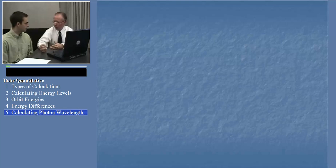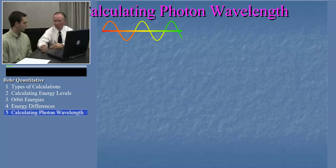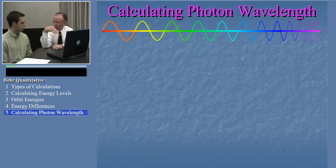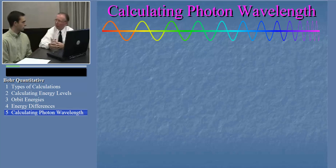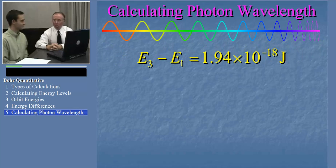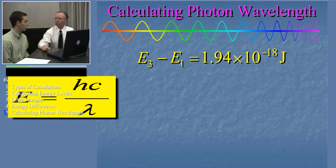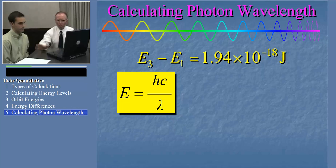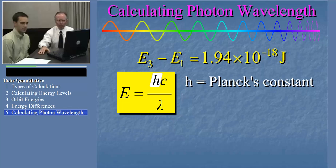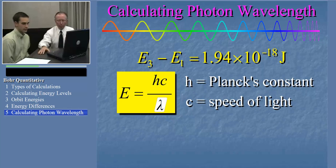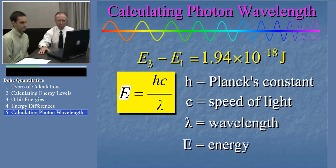Now that we know the energy differences between the orbits, we can calculate the wavelength of a photon emitted when the electron falls from the higher orbit to the lower orbit. We'll calculate the wavelength for E3 to E1. The relationship between the energy of a photon and its wavelength is: energy equals hc over lambda. Here h is Planck's constant, c is the speed of light, and lambda is the wavelength. Here are the values of h and c.